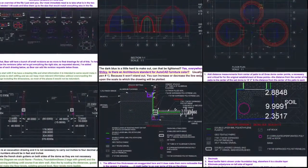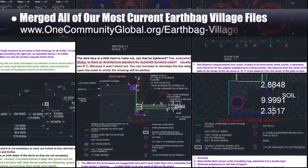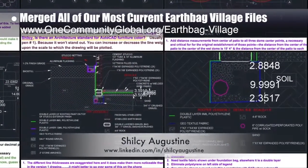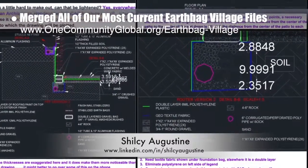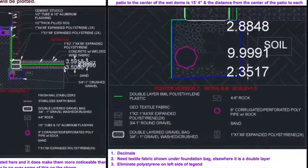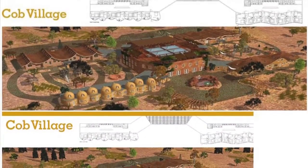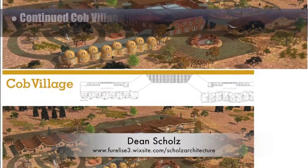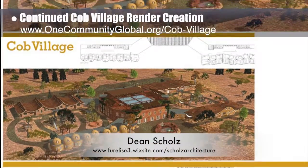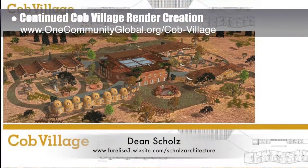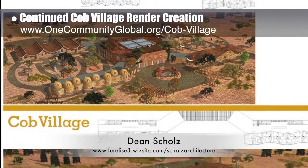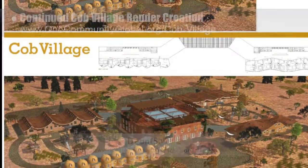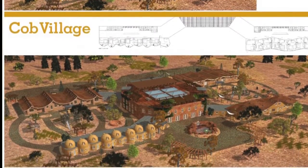The core team merged all of our most current EarthBag Village files and created a list of revisions needed for Shilcee Augustine, Architect. Dean Schulz, architectural designer, further developed what's necessary to create quality Cobb Village Pod 3 renders. This is update 38 of his work, providing the final full quality render for this village so we could update the site with all the images you see here.